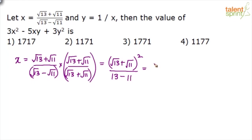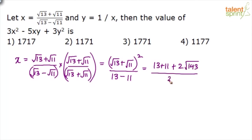Simplifying: the numerator (a + b)² gives 13 + 11 + 2√(13×11). Since 13×11 = 143, the numerator is 24 + 2√143, divided by 2. Upon simplification, this comes out to be 12 + √143. This is the value of x.